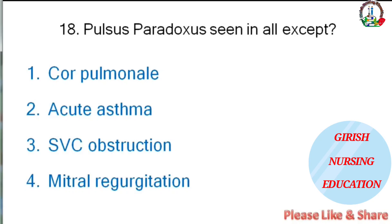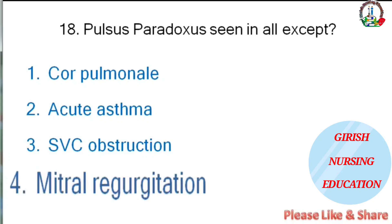Pulsus paradoxus is seen in all except — cor pulmonale, acute asthma, SVC obstruction, or mitral regurgitation. The correct answer is mitral regurgitation.